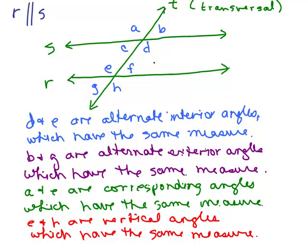How about exterior? We're looking at what's above one of the parallel lines and below the other parallel line. So again, on opposite sides, G and B are alternate but they're exterior and A and H are alternate but exterior. So all of these angles, alternate interior angles have the same measure, alternate exterior angles have the same measure, corresponding angles have the same measure and vertical angles have the same measure.